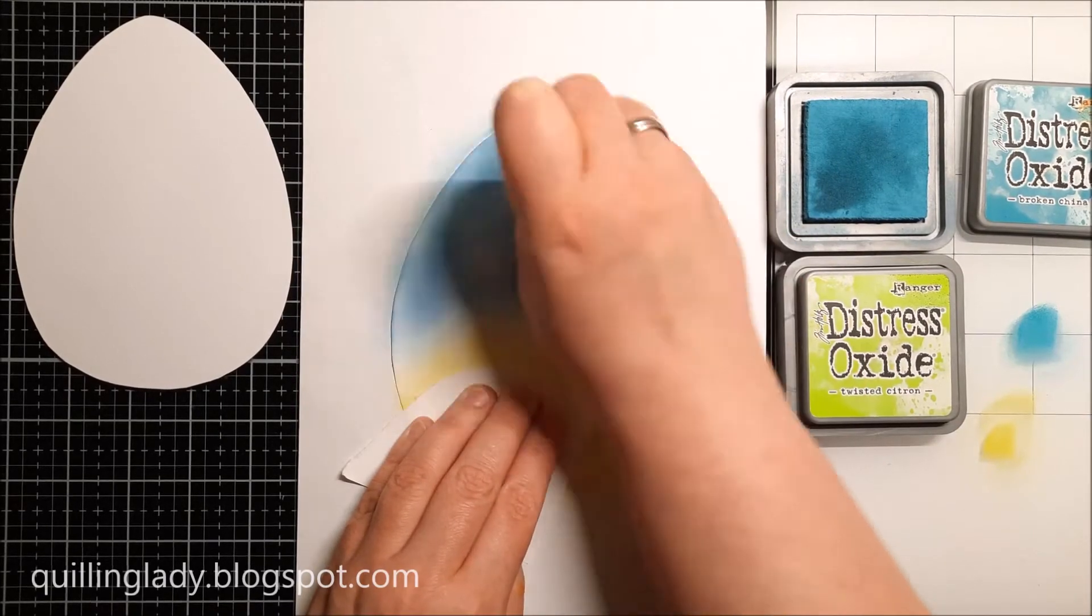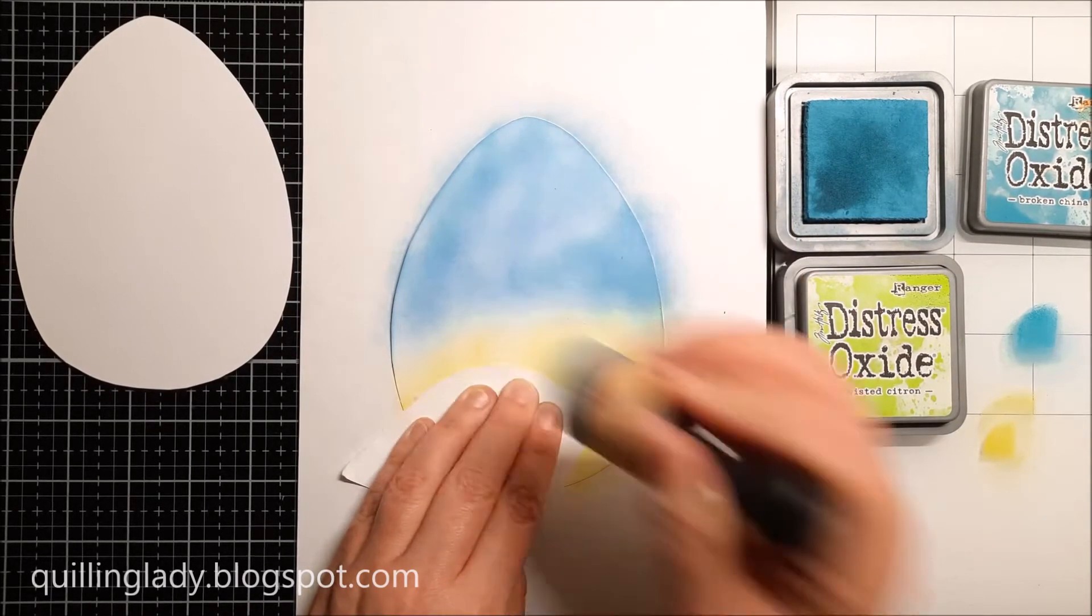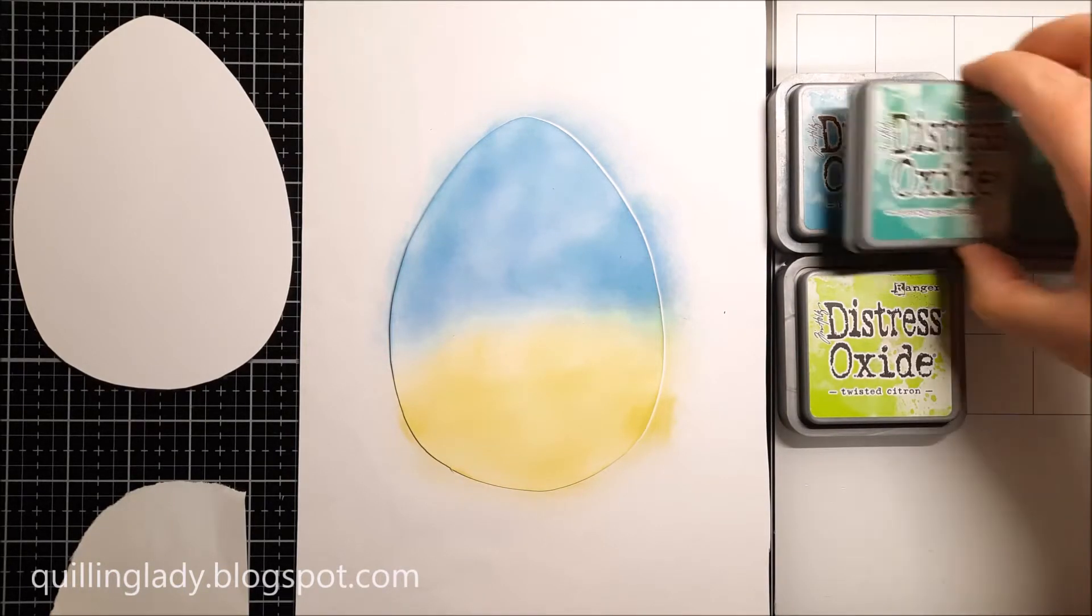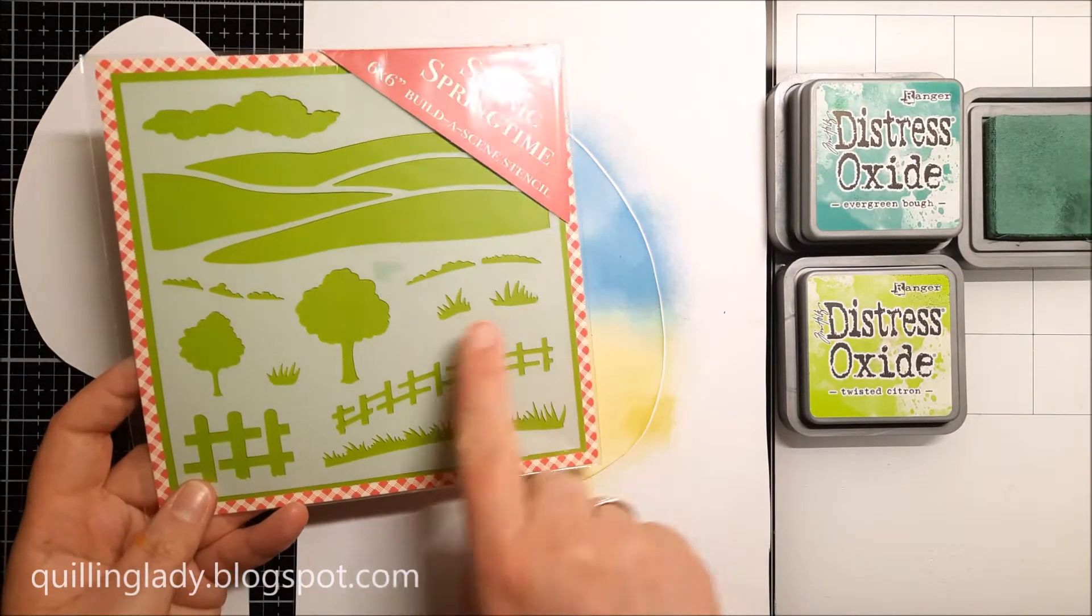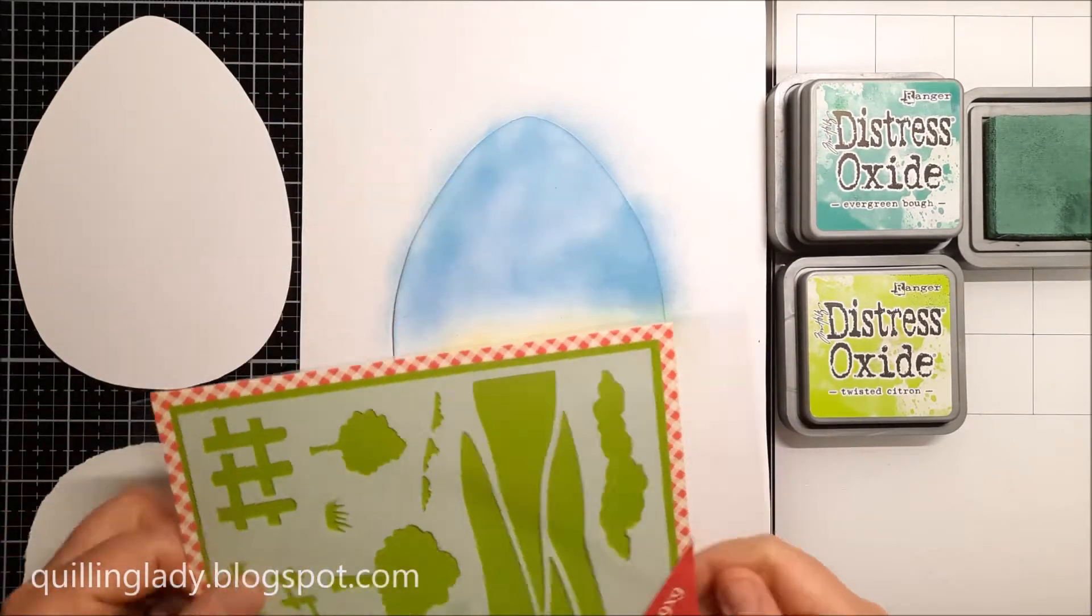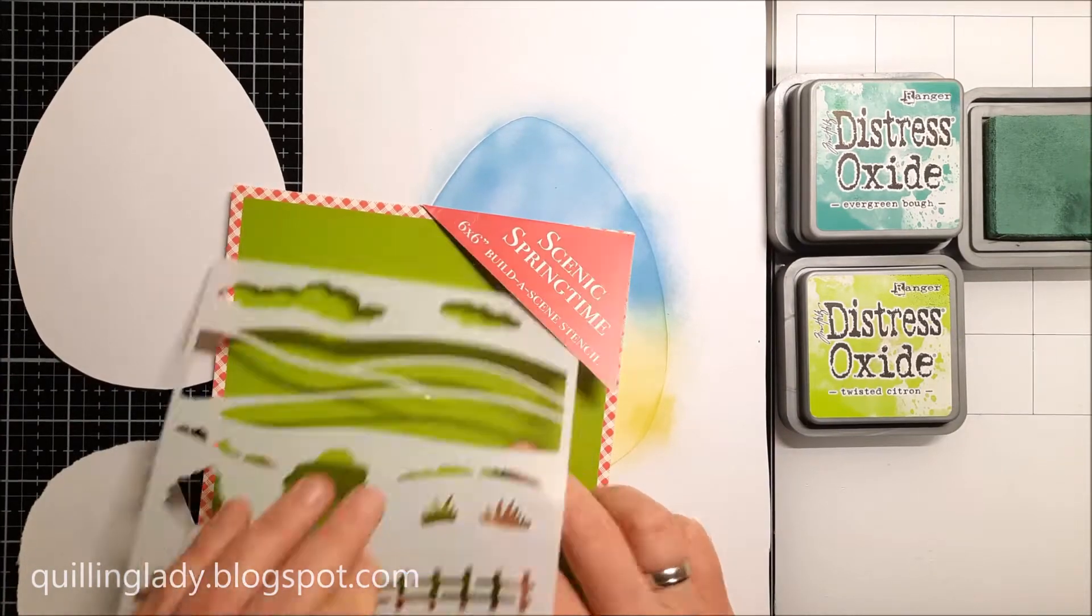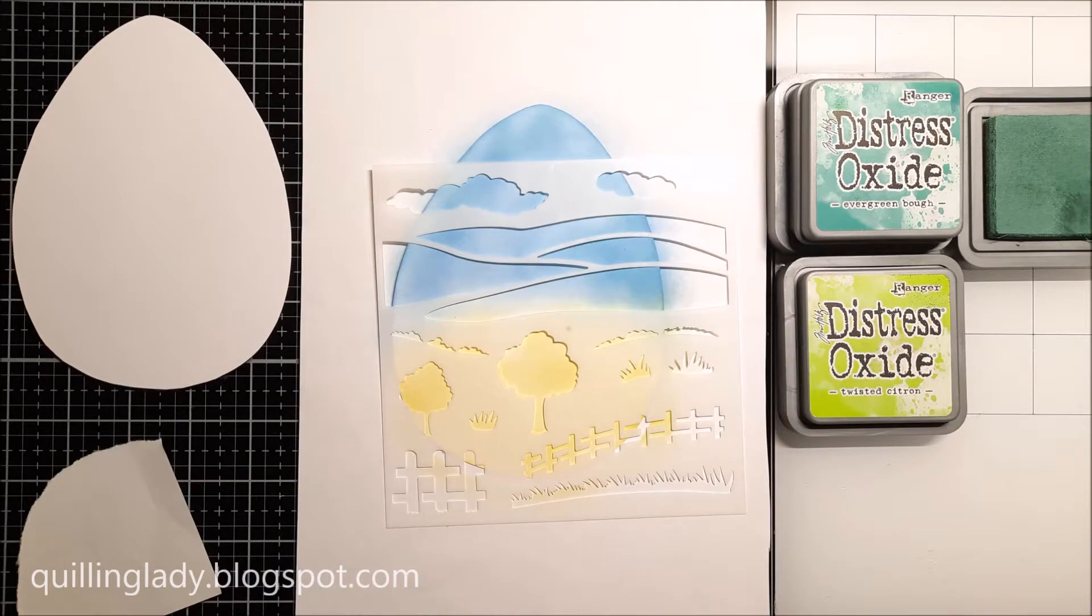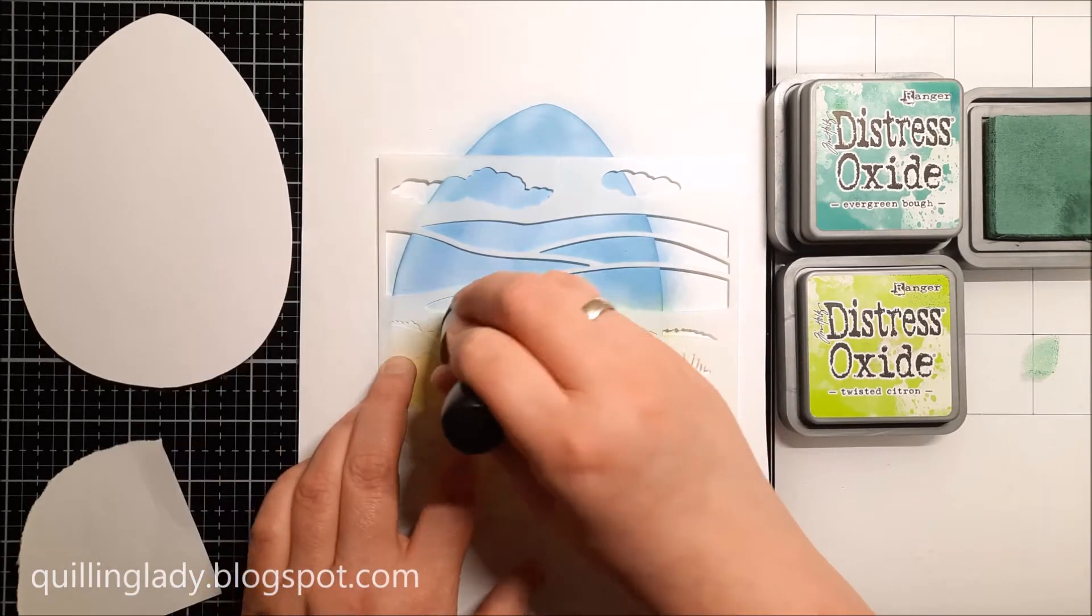Here I'm actually using blue for sky and Twisted Citron for grass, and using Evergreen Bough I'm going to use a stencil and add even more grass. As you can see, we've got some templates here, and this is the easiest and quickest way to do it.